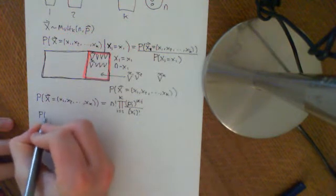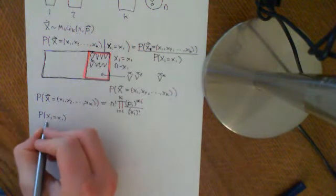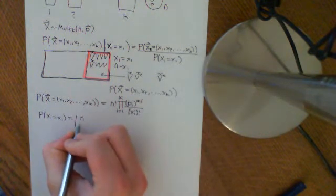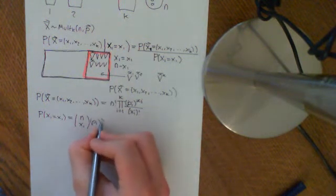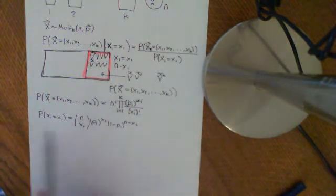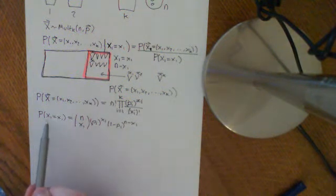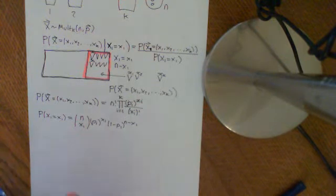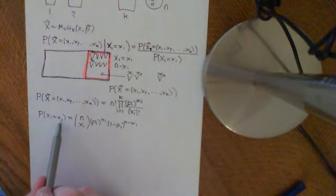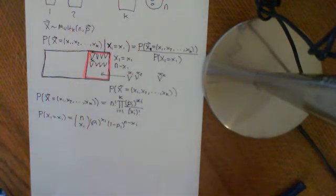Now what we need to know is the probability that big X1 equals little x1. That is the marginal PMF of this random variable big X1, which we calculated previously. We showed that this was binomially distributed: n choose x1, times p1 to the power of x1, times 1 minus p1 to the power of n minus x1. This result generalises to whichever of the random variables x1, x2 through xk you want — x1 was a specific example but the process is the same for any of them.